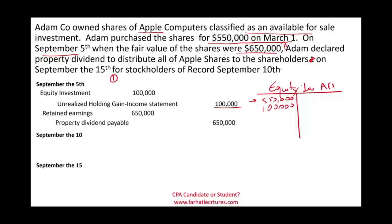That is the entry on September 5th. What is different about this entry is adjusting the property to market value — this could also have been a loss, but the point is you mark to market as if you are going to sell it. On September 10th, the date of record, there is no journal entry. All we do is review our records to determine who owns Adam Company shares as of September 10th — those shareholders will be compensated on September 15th.